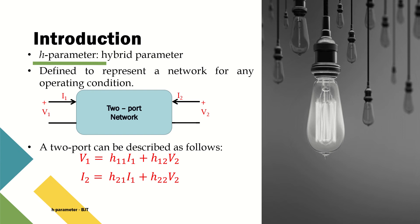In general, we are considering a two-port network with two accessible terminals where the measurable quantities are V1 and I1 referring to the input side, and V2 and I2 referring to the output side, while the parameters within this two-port network remain unknown.